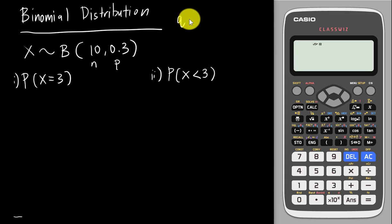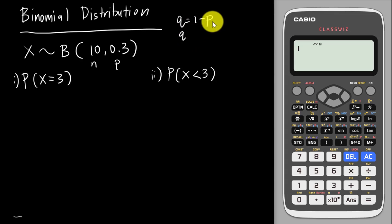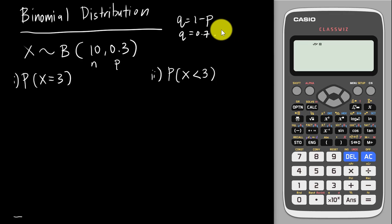We know q equals 1 minus p, which is 1 minus 0.3 = 0.7. The mean is np and the variance is npq, but I'm not going to cover those in this video.